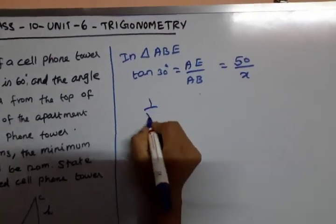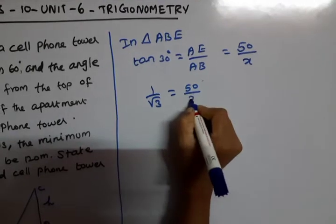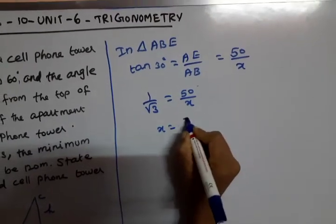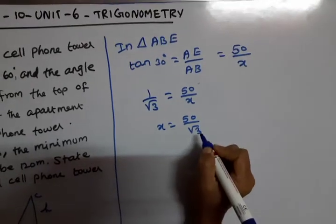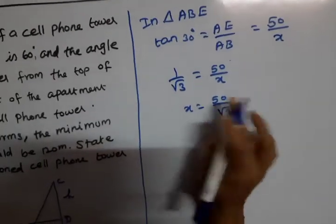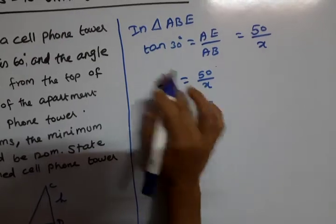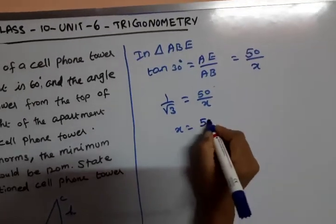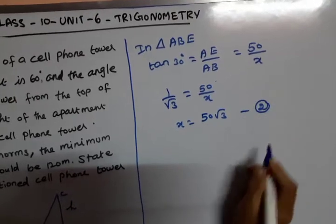Tan 30° equals 1 by root 3, so 1 by root 3 equals 50 divided by x. Therefore x equals 50 root 3. This is the second equation.